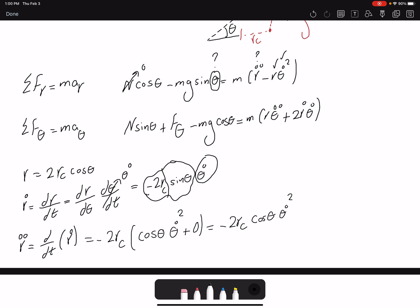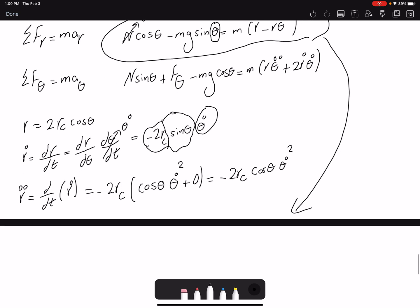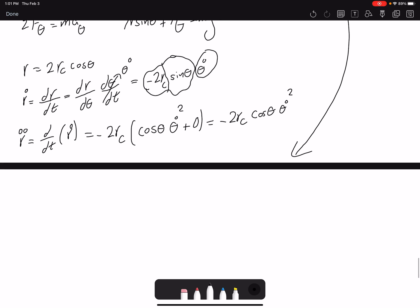The problem is not giving me any numbers or any value. It's just symbolic. So I need to plug in the value here. So N is 0. I'm going to deal with this equation. And then I have negative 2Rc cosine theta theta dot squared minus R theta dot squared. So R here for me is 2Rc cosine theta.